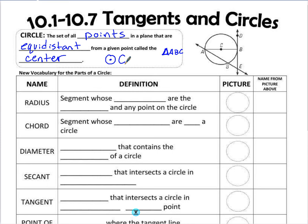Here is some other important terminology about circles. The first is called the radius. A radius is a segment whose endpoints are the center and a point on the circle. In the diagram, we have two radii: AC and CB. The order of those endpoints is not specific — it can be AC or CA, and CB or BC.